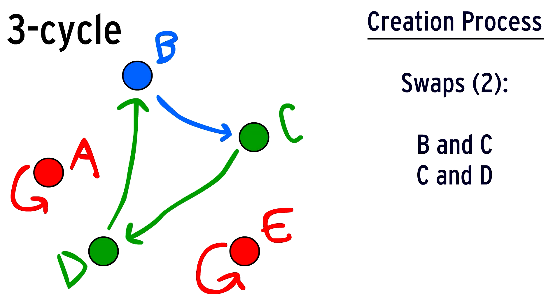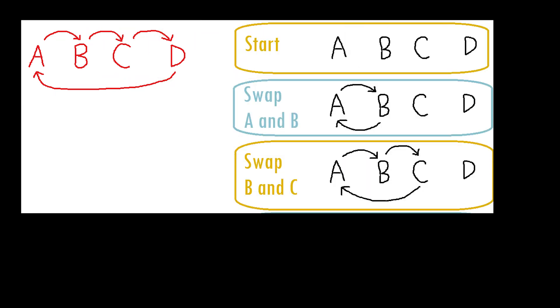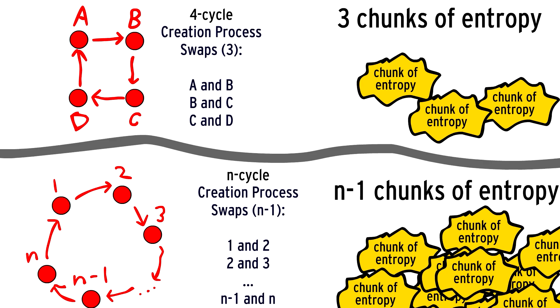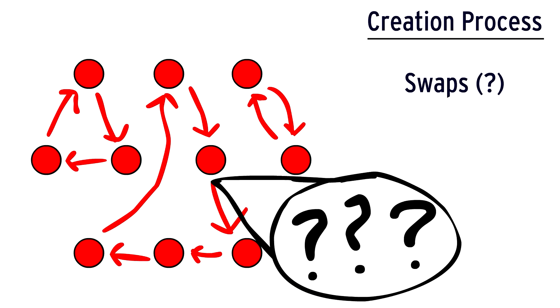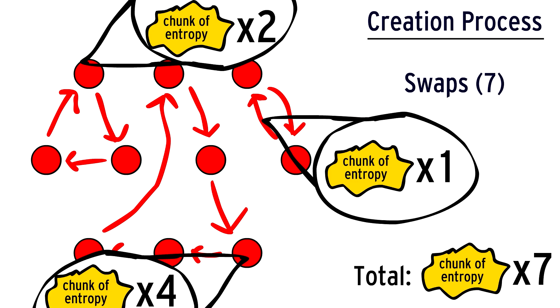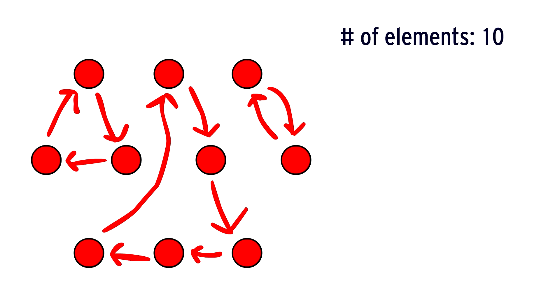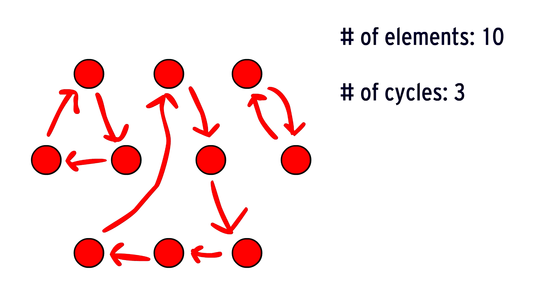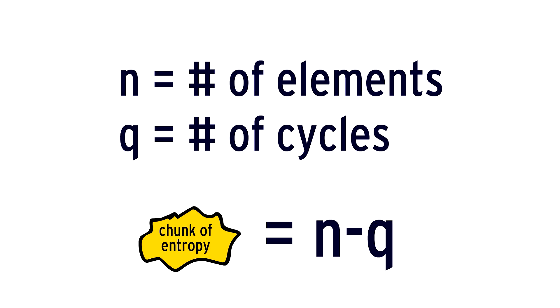A three-cycle can be created with one swap and then another swap, so it has two chunks of entropy. To create a four-cycle of A going to B going to C going to D, first swap A and B, then swap B and C, and finally swap C and D. So every four-cycle can be created with three swaps, meaning they have three chunks of entropy. More generally, any n-cycle has n-1 chunks of entropy. A one-cycle clearly has zero chunks of entropy. When you're faced with a bunch of cycles, there's a fast way to calculate total entropy: you know the sum of cycle sizes equals the number of elements. With three cycles, you subtract three from the total to find the chunks of entropy. More generally, any set of n elements and q cycles has n-q chunks of entropy.